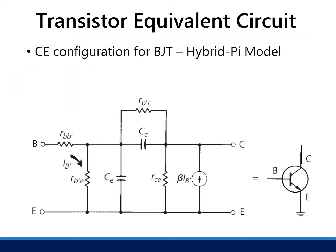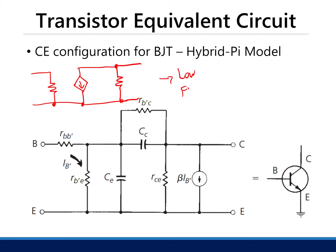The equivalent circuit of a BJT is the hybrid pi model — what you should recall from EEE-51. This is the simplest model, with a lot of low-frequency approximations. It includes an output resistance, a transconductance element gm·v-pi, and v-pi is measured at the input resistance r-pi.